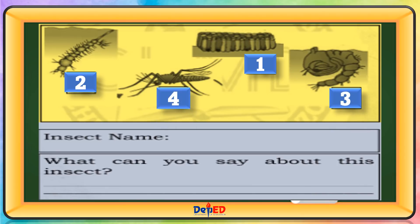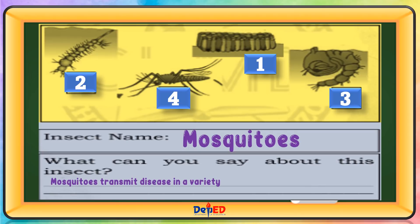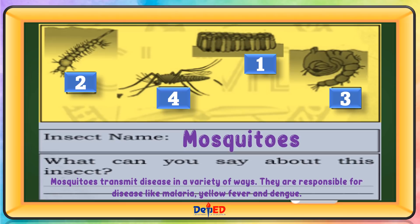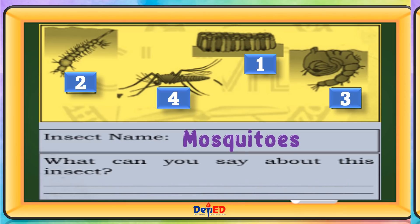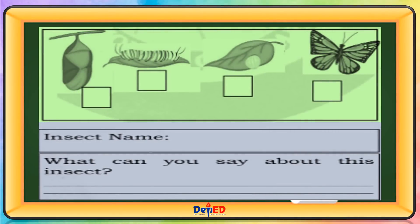Insect name: Mosquitoes. What can you say about this insect? Mosquitoes transmit disease in a variety of ways. They are responsible for diseases like malaria, yellow fever, and dengue.